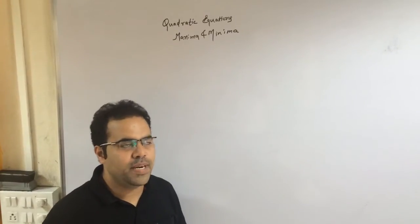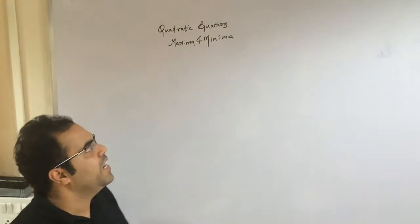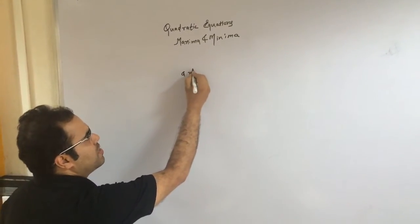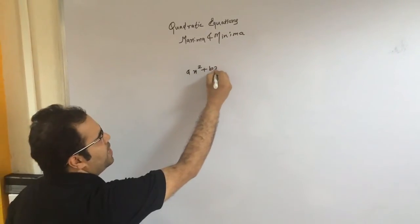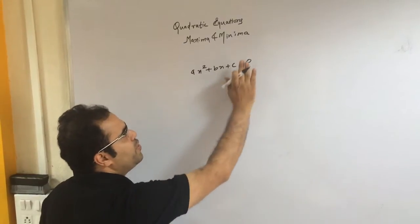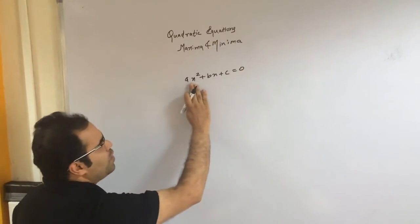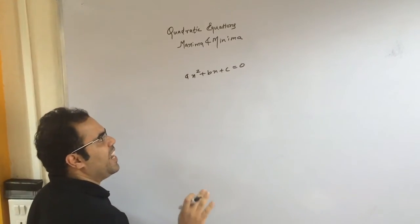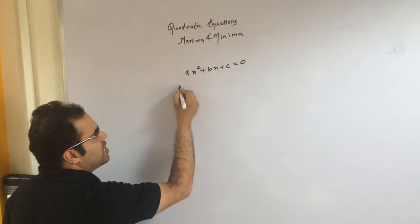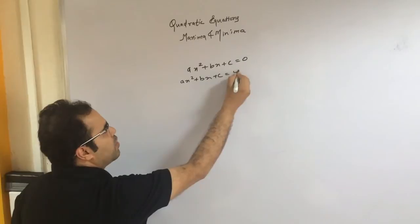Hello everyone. In this video we will be discussing maxima and minima of quadratic equations. All of us are aware of the basic quadratic equation which looks like ax² + bx + c = 0. When we put an equal sign this becomes an equation; when we don't, it remains an expression. So ax² + bx + c is an expression, and when you equate it to 0 it becomes an equation. Here we are going to discuss what will be the maxima or minima value of this expression.